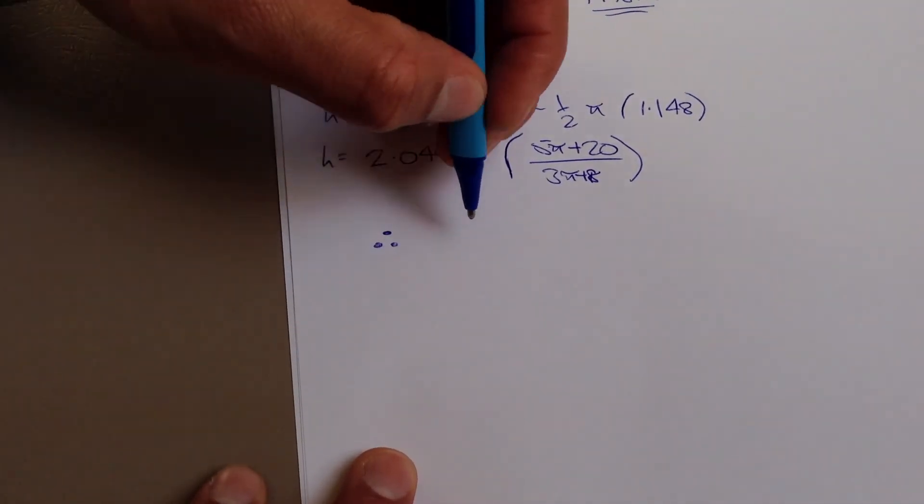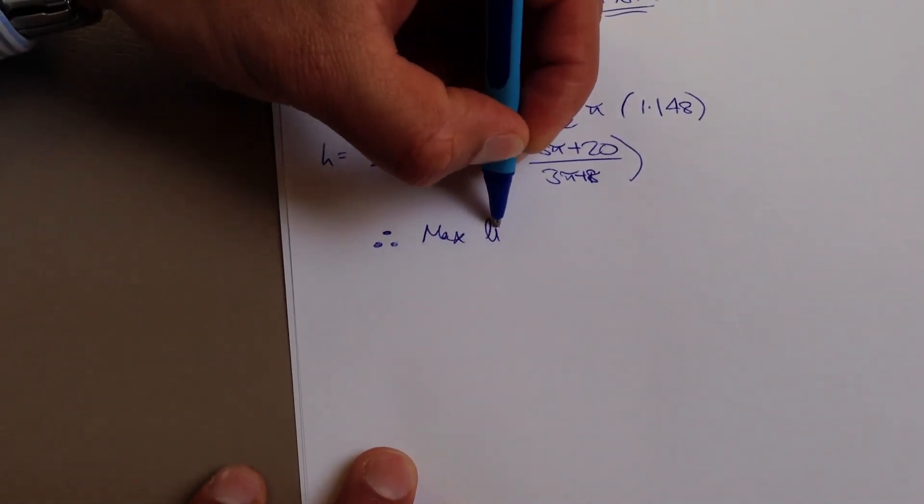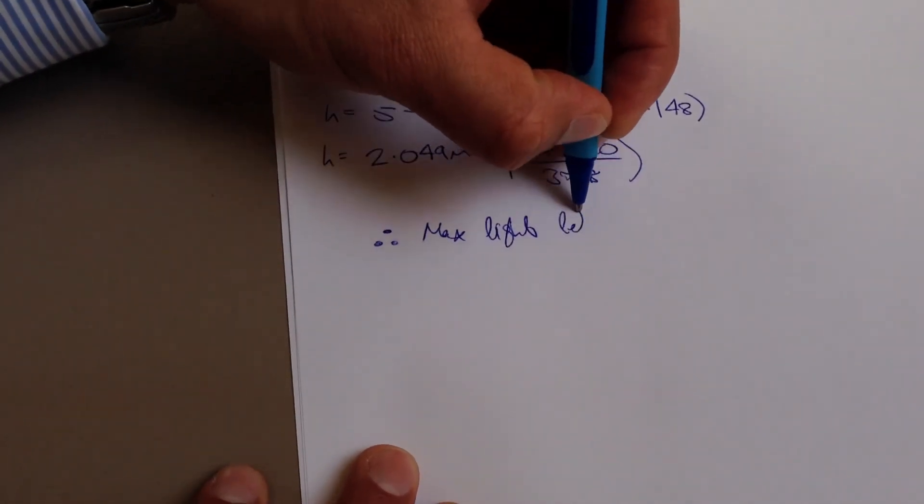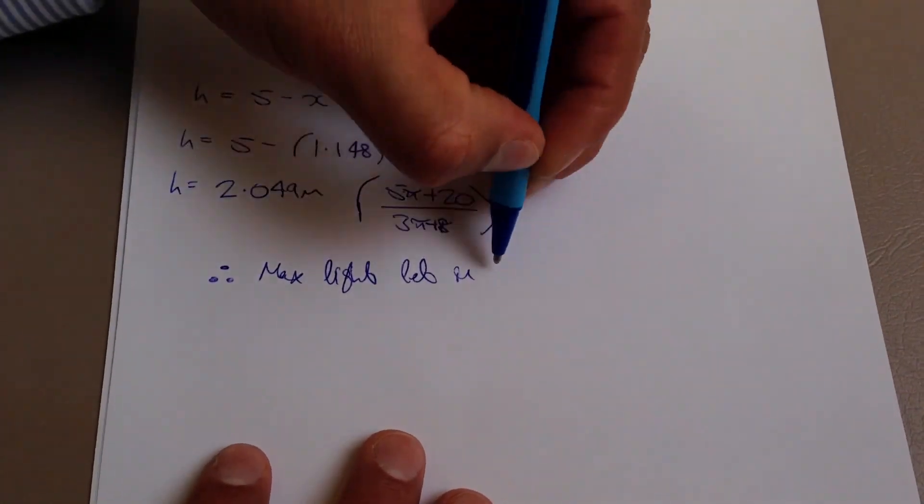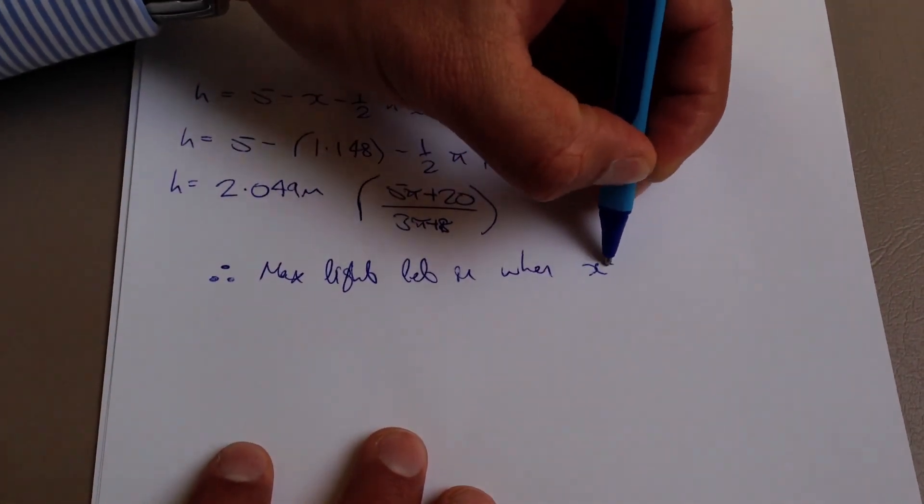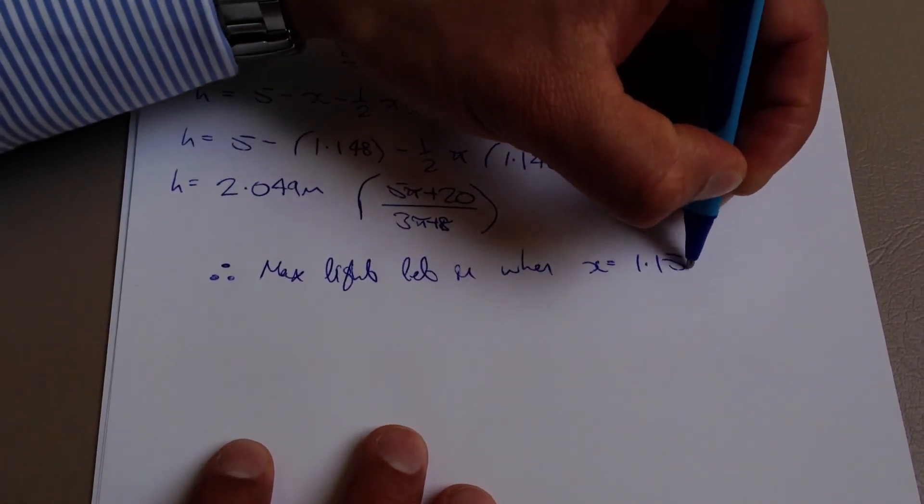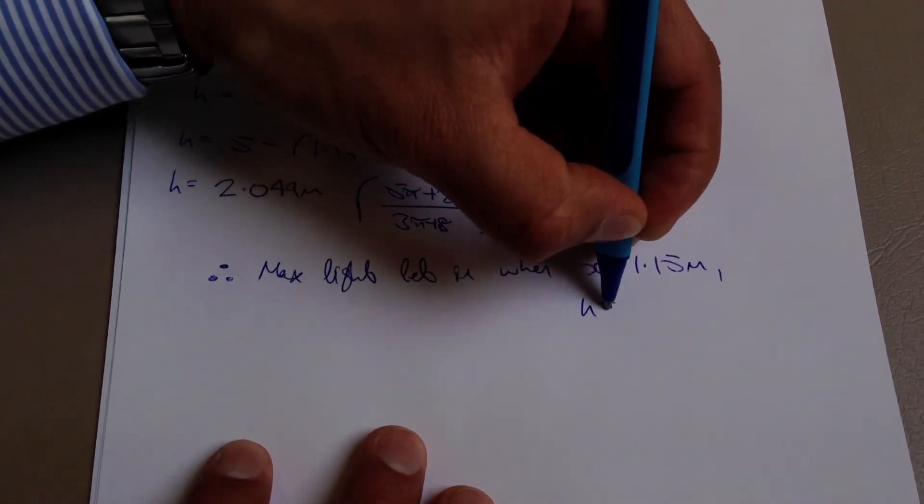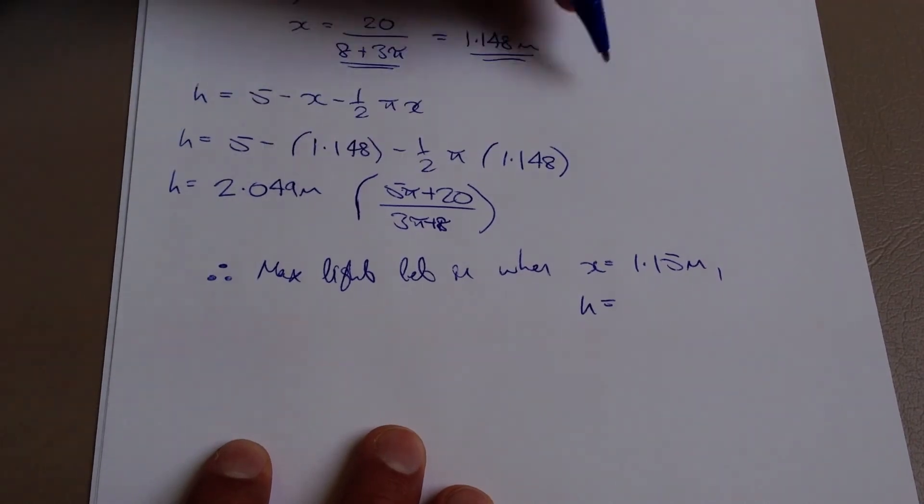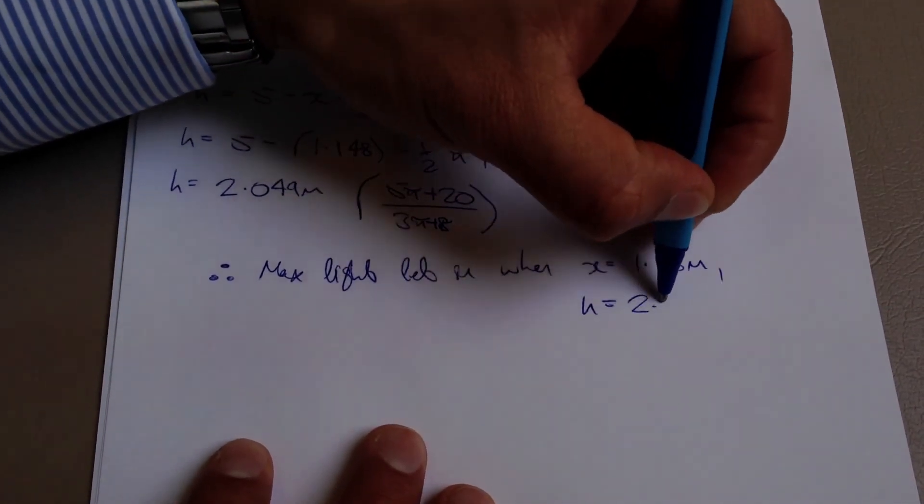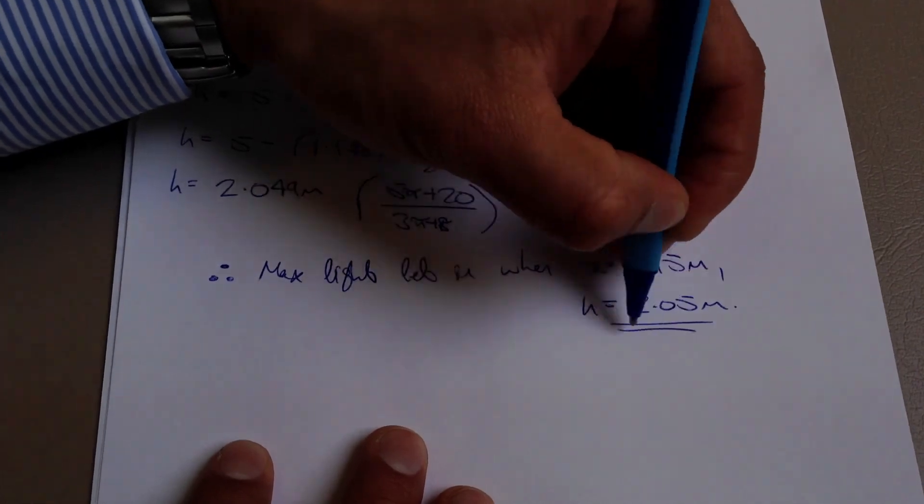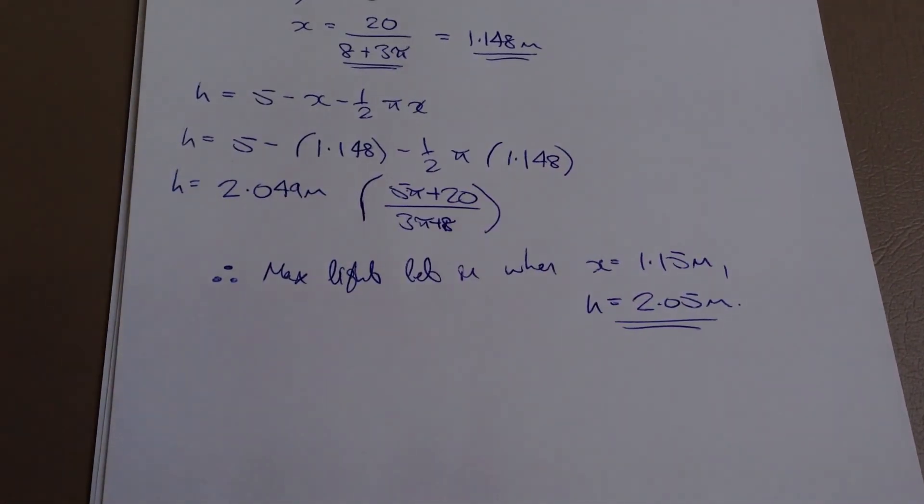max light let in when x equals 1.1. And, I'll round it to two decimal places, 1.15 meters. And, h equals 2.05 meters. And, that's pretty much it. That's the question answered. We've given them the x and the h, which gives us the maximum amount of light. That's pretty much it.